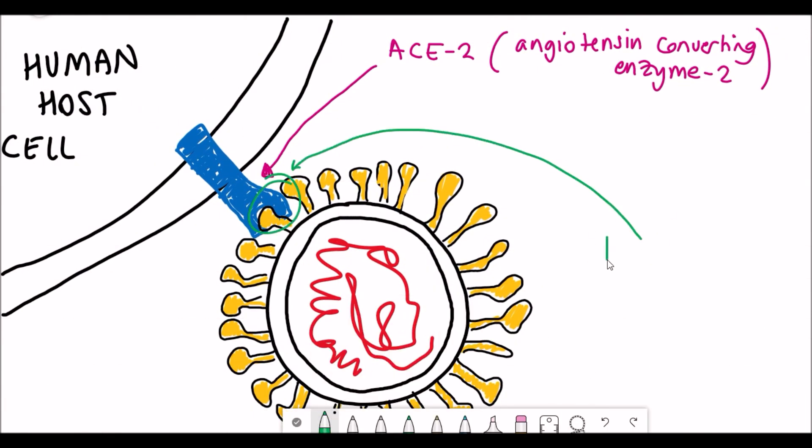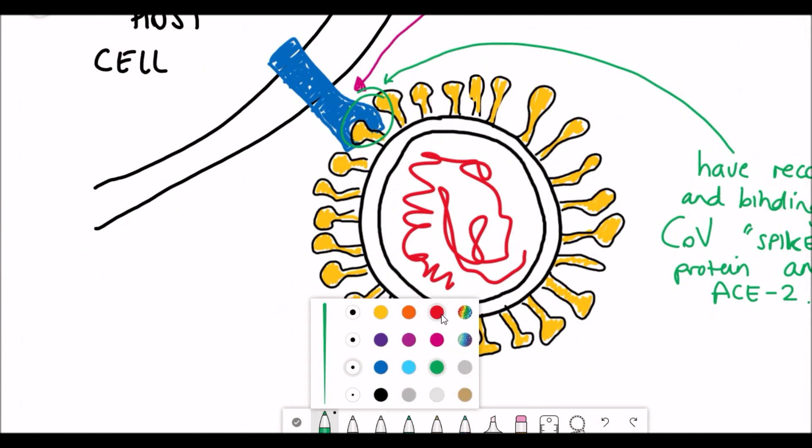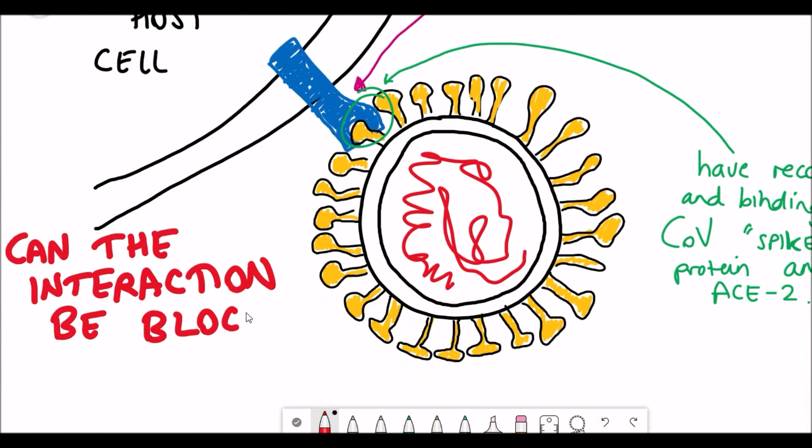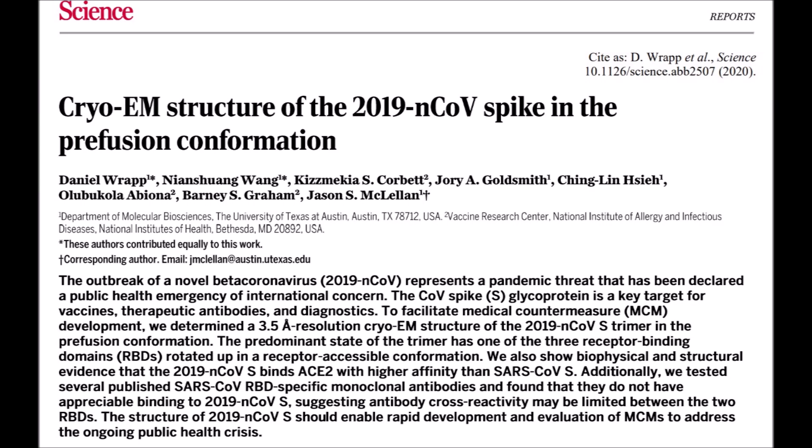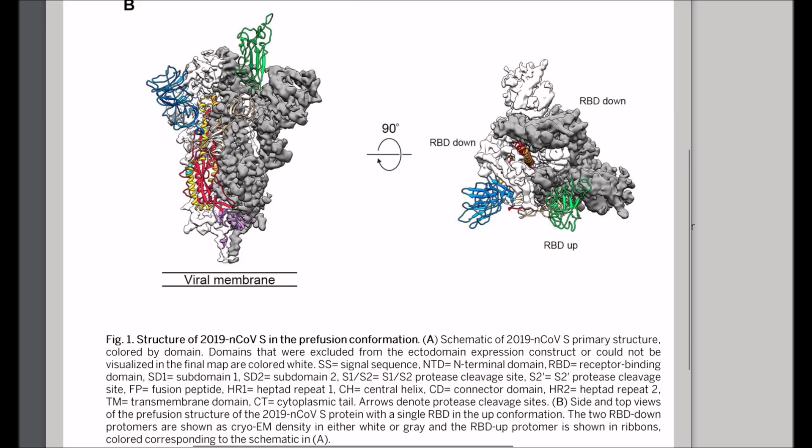So the question is, can we block this interaction to be able to prevent the spread of the virus? So one bit of information that would really help scientists be able to develop drugs that could target this interaction to block and prevent transmission is to have the protein structure of the spike protein.